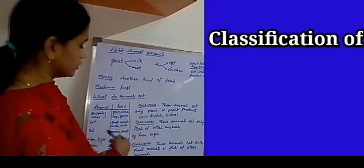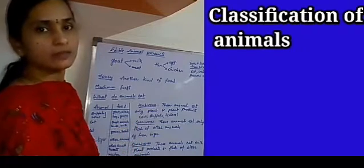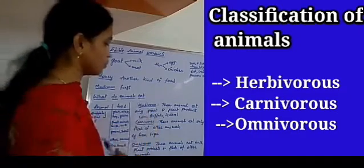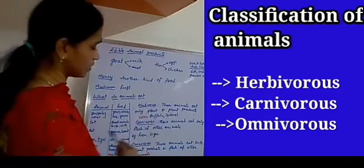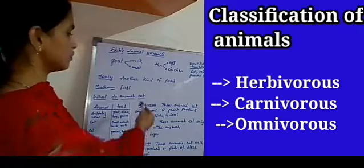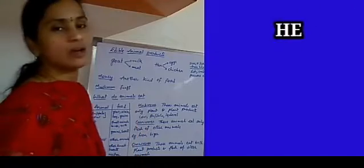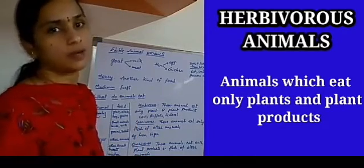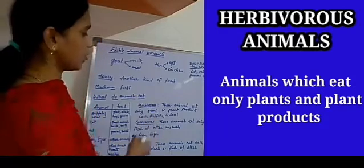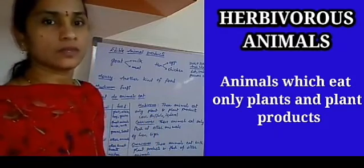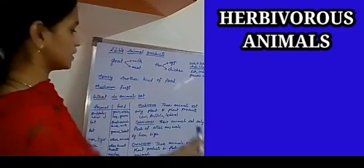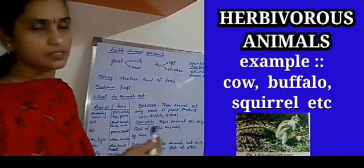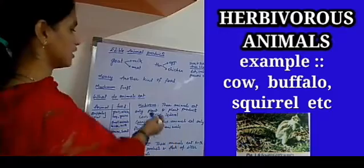Depending upon the food these animals eat, animals are differentiated into three types: herbivores, carnivores, and omnivores. Herbivores are animals which eat only plants and plant products. Examples: cow, buffalo, squirrel. Squirrels eat nuts; cows and buffaloes eat grass, grains, hay, oil cake, etc.